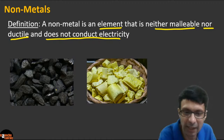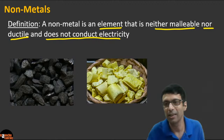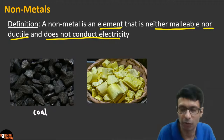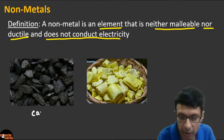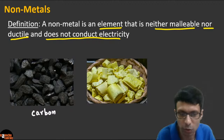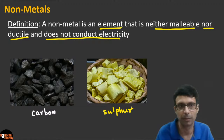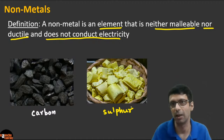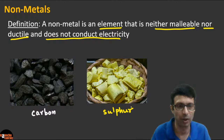Can you identify the non-metals in the picture? The first picture is coal — or more precisely, carbon. The yellow one is sulfur. Both carbon and sulfur are non-metals. If you beat them they are brittle, you cannot make wires out of them, and usually they don't conduct electricity.